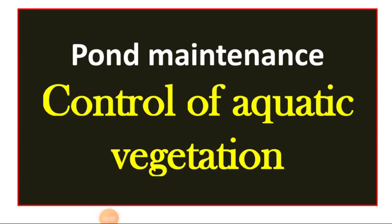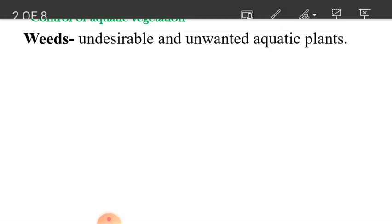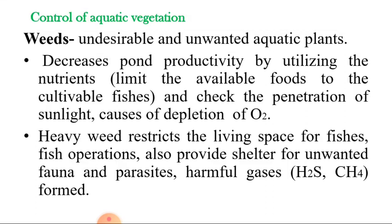Hello and welcome. In this video we are going to discuss one of the important points in pond maintenance: the control of aquatic vegetation, that is called as weeds. Weeds are defined as undesirable and unwanted aquatic plants. These weeds can harm the pond ecology and also the fish culture.